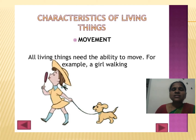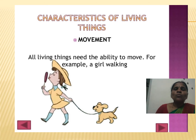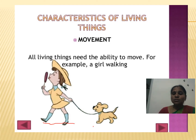Let's see the first characteristic: movement. All living things have the ability to move. Living things can move in search of food. For example, observe the picture — a girl walking, and along with the girl, a dog is also walking.